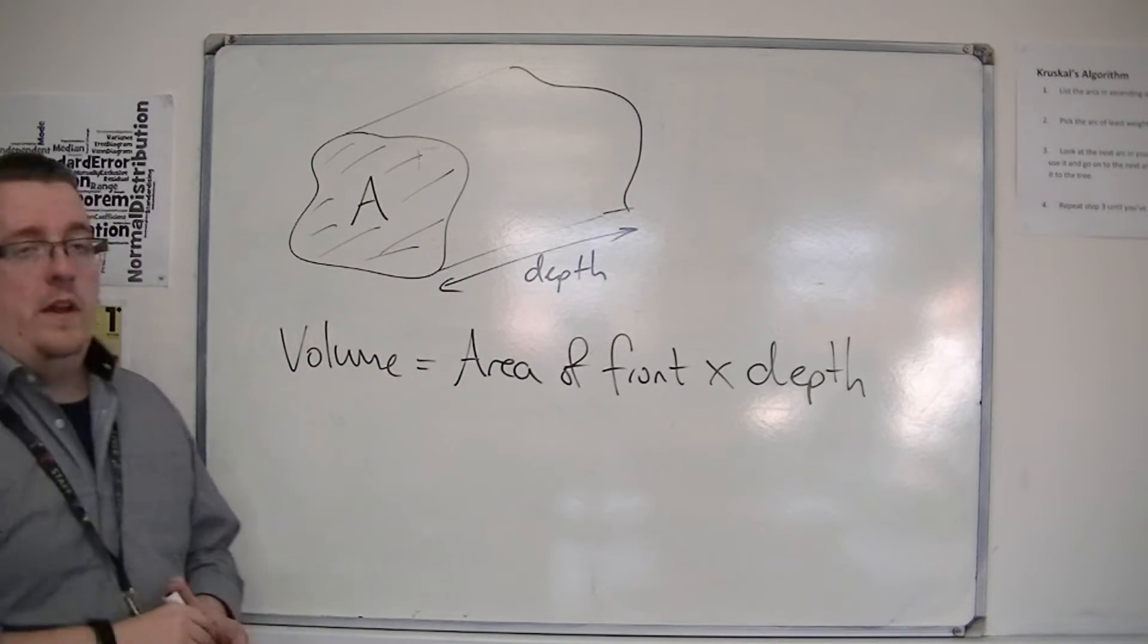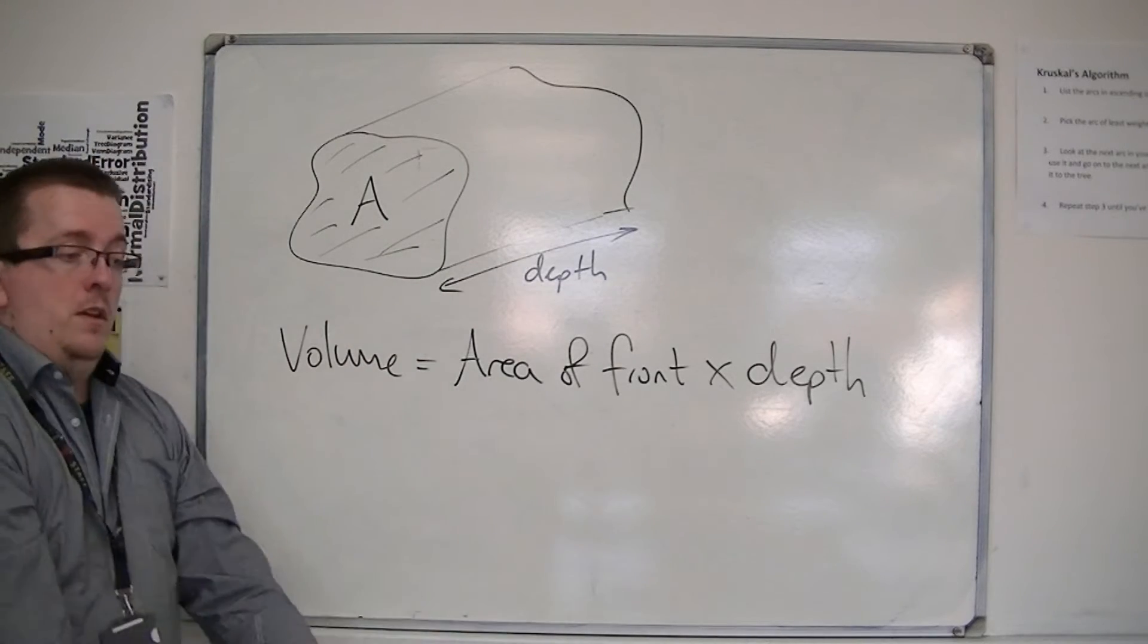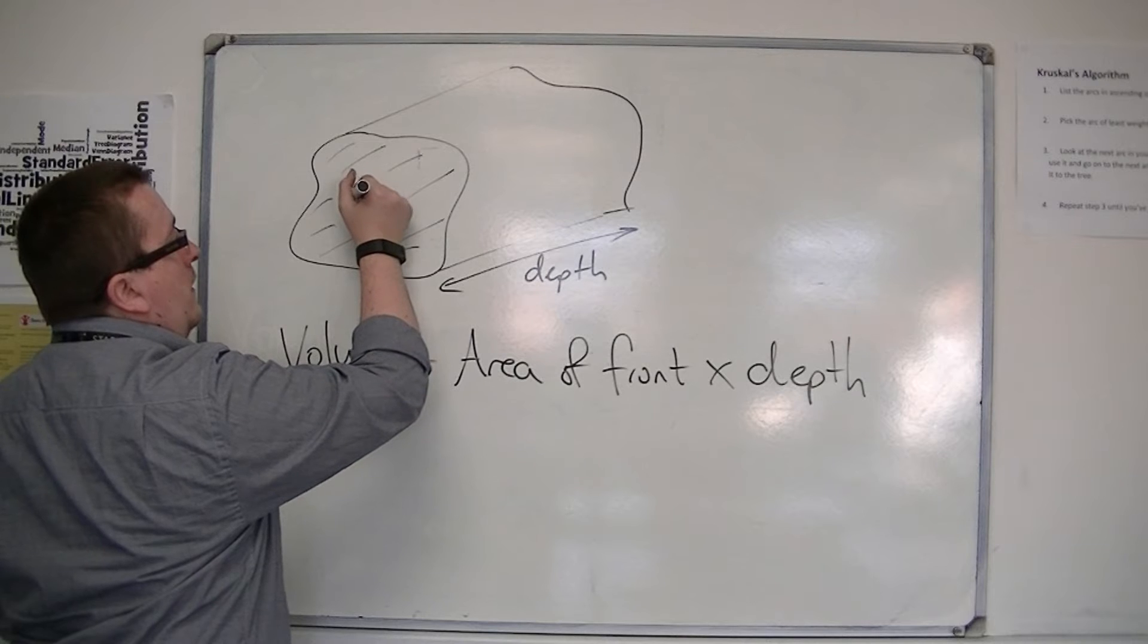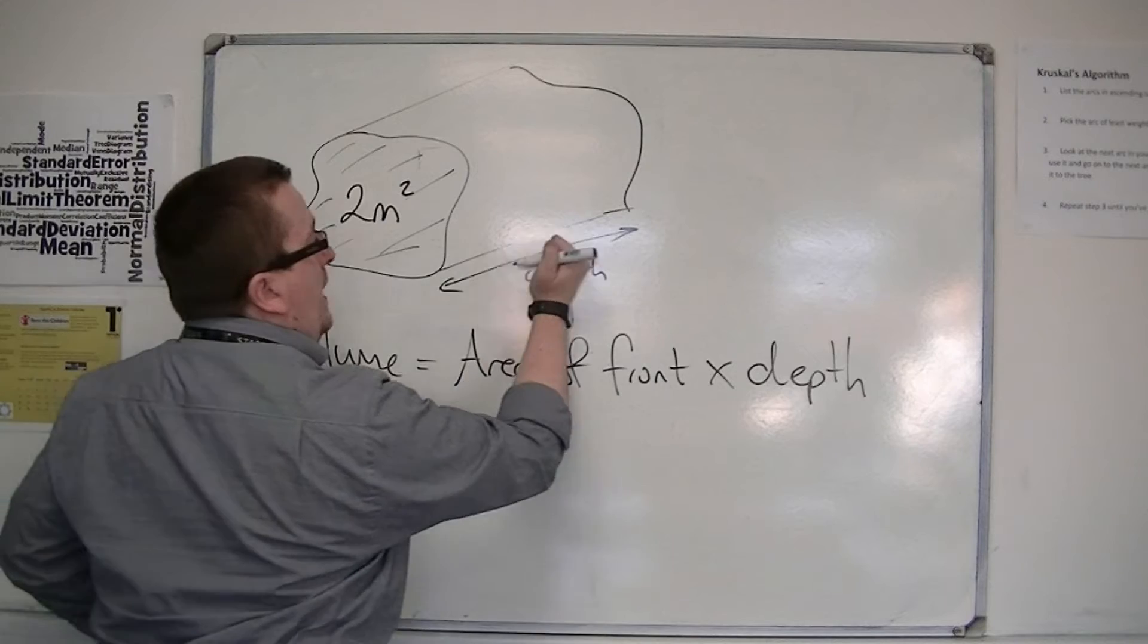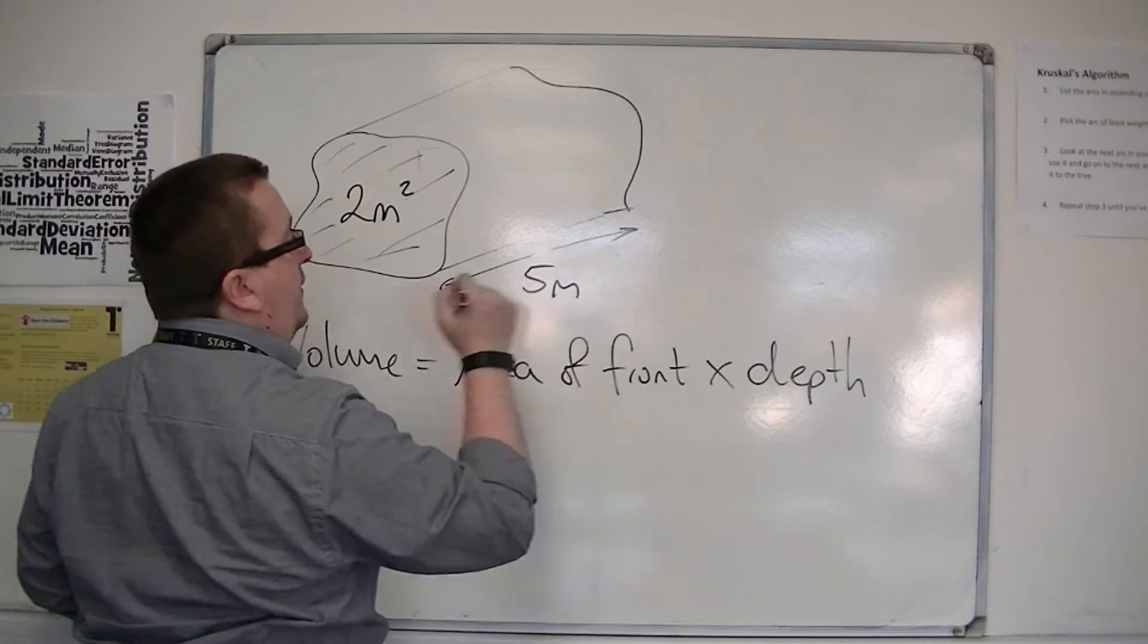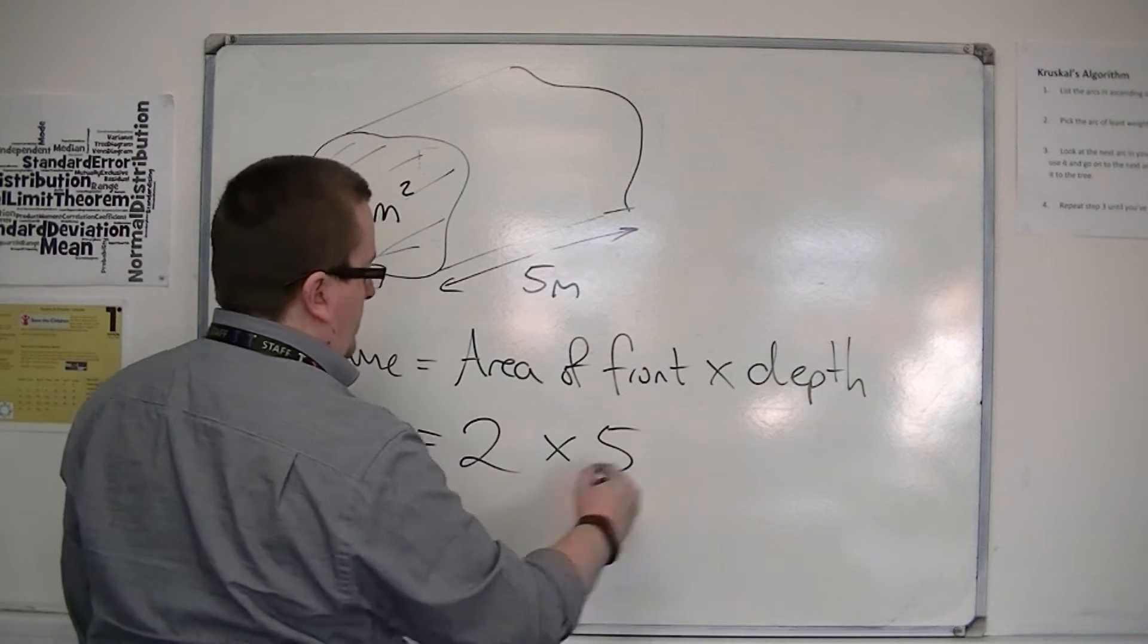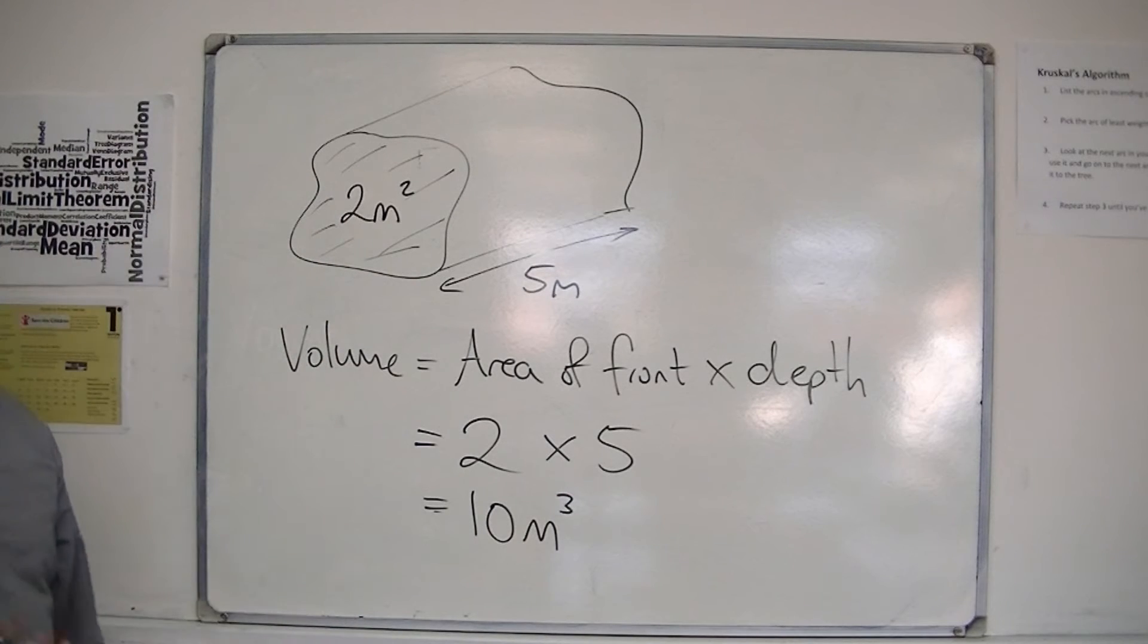If you knew that maybe this was a tree that had been cut down, and this was a length of the tree, then if you knew that the area was, let's say, 2 metres squared, and the actual piece of trunk was 5 metres long, so we've got a big tree here, then the volume is 2 times 5, so that would be 10 metres cubed of wood.